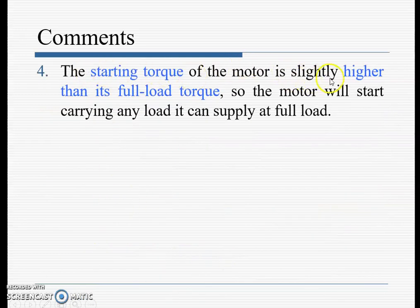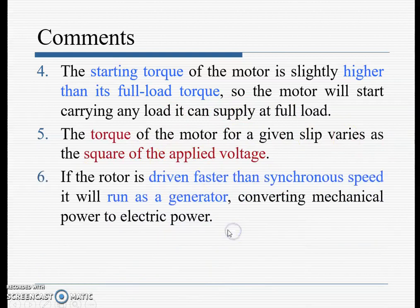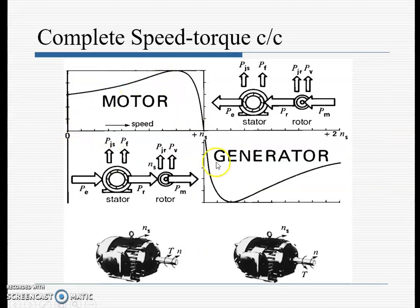The starting torque of the motor is slightly higher than its full-load torque, so the motor will start carrying any load it can supply at full load. The torque for a given slip varies as the square of the applied voltage. If the rotor is driven faster than the synchronous speed, it runs as a generator converting mechanical power to electrical power. Between 0 and n_s the machine acts as a motor; from n_s to 2n_s it works as a generator.